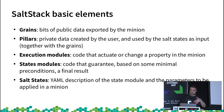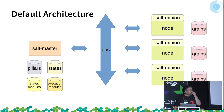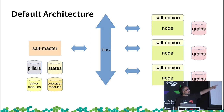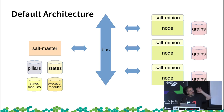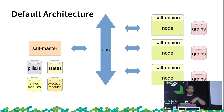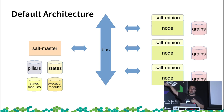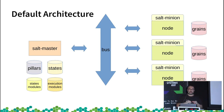Salt has its own jargon: grains, pillars, execution modules, and state modules. In the typical master-minion configuration, on the minion side you have grains — the minimal data that the minion exports to the master. This includes CPU, hard disk, memory, network, MAC address, and so on. It's basic information the minion publishes.